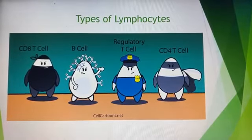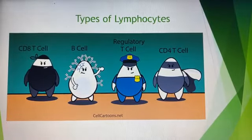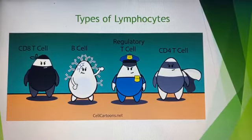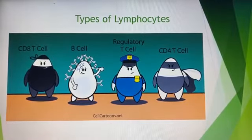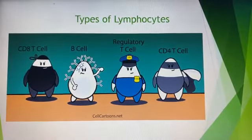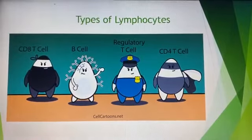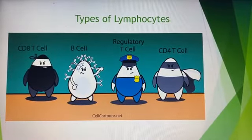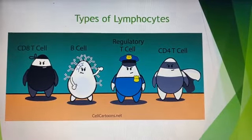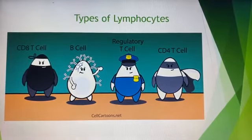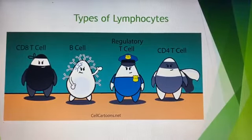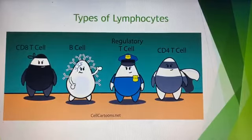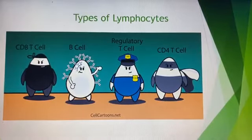The CD4 T cell, shown as a cartoon on the right, is also known as the T helper cell. It organizes and alerts other cells to coordinate the immune system to clear pathogens. Pathogens are considered the bad guys. The regulatory T cell, depicted as a police officer, acts like a suppressor cell that controls the immune system.